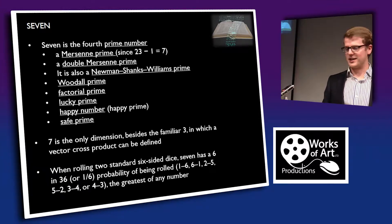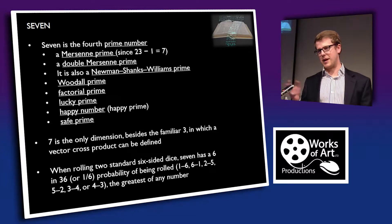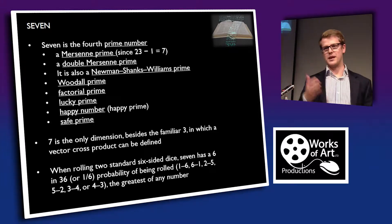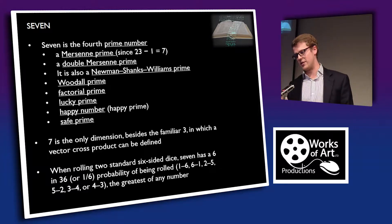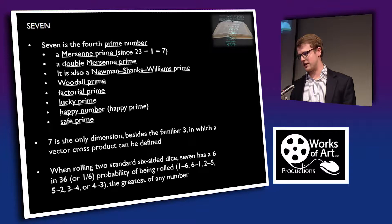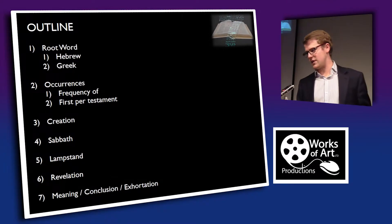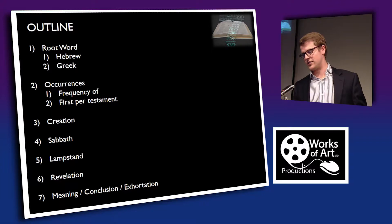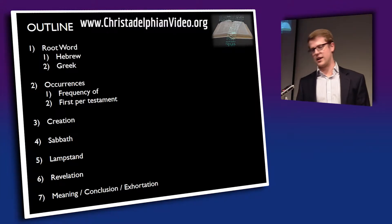We can't look at all of the number seven tonight, so we'll look at some background — the words and their meanings — and then pick out some significant occurrences. We'll look at the root words in Hebrew and Greek, occurrences and frequencies, and most importantly the first occurrences. We'll cover creation, the Sabbath, the lampstand, and Revelation, then draw our thoughts to a conclusion.